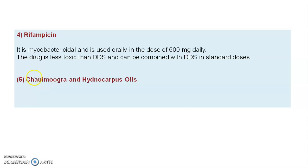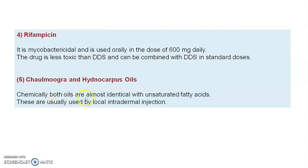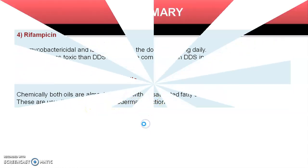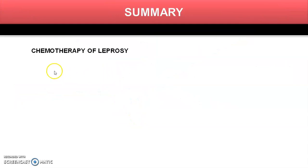The next drugs are chaulmugra and hydnocarpus oils. Chemically, both oils are almost identical, consisting of unsaturated fatty acids. These are usually administered by local intradermal injections.